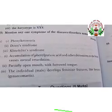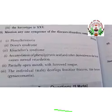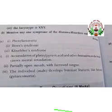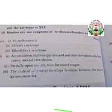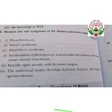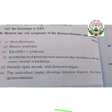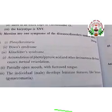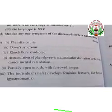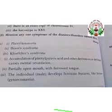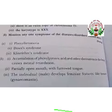For Down's syndrome, a symptom is a partially open mouth with a furrowed tongue. For Klinefelter's syndrome, the individuals will be males — specifically, sterile males with feminine characters such as breast development, known as gynecomastia. These are the various symptoms we have studied.